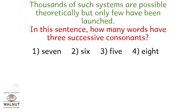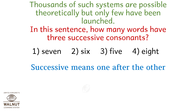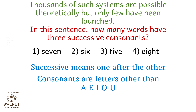In the sentence 'Thousands of such systems are possible theoretically but only few have been launched,' how many words have three successive consonants? Successive means one after the other; consonants are letters other than vowels A, E, I, O, U. The consonant groups found are: NDS, SSY, S, LLY, NLY, NCH — giving a total of five such occurrences. The correct answer is option three, five.